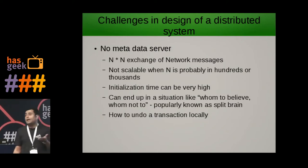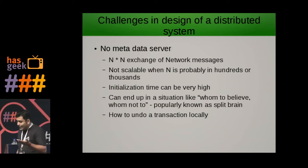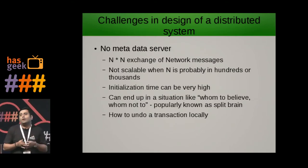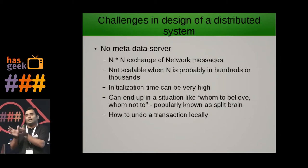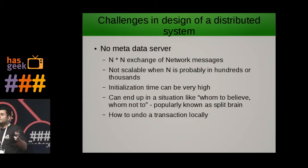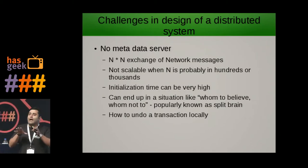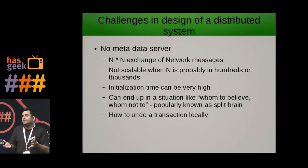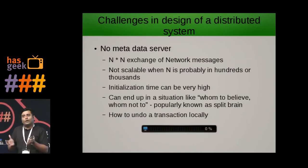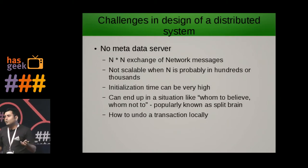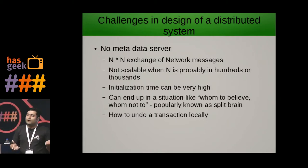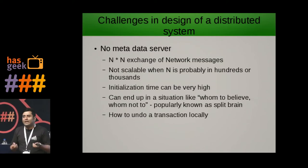The initialization time can also be very high, because when you bring up a node it has to get all the information from the other nodes and store it in its local configuration — requiring N×N handshaking. As N grows the time goes exponential. Consider a 1,000-node cluster: the initialization time would be really very high, which we cannot afford in a real-time distributed system.